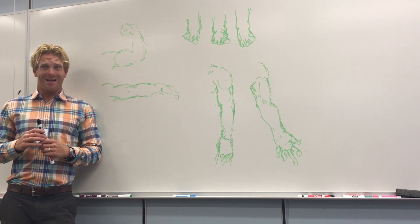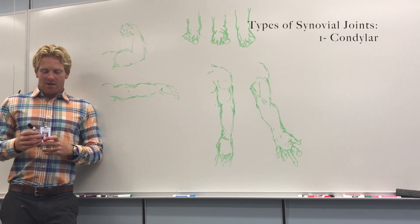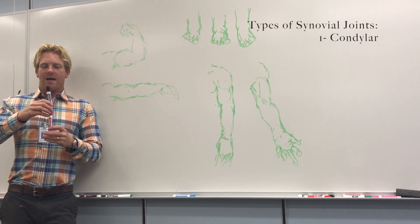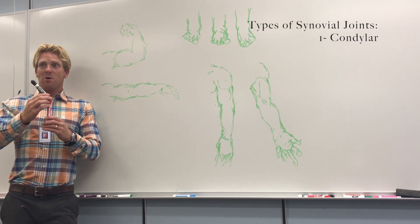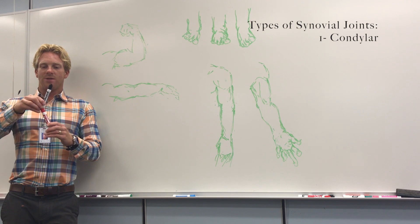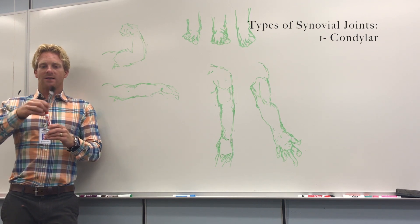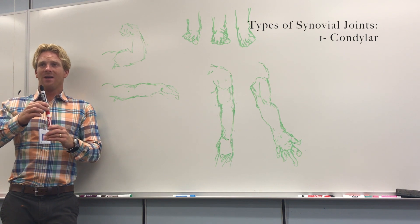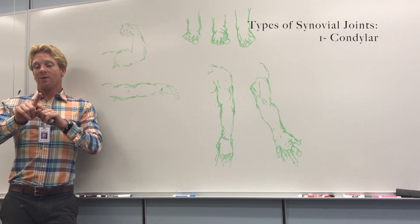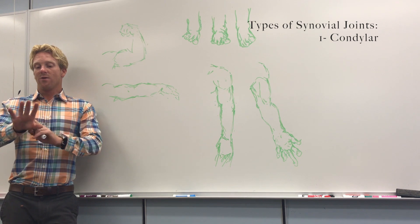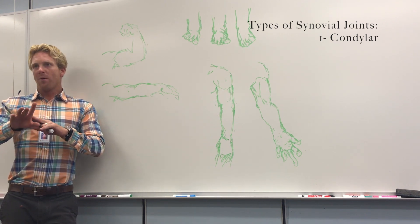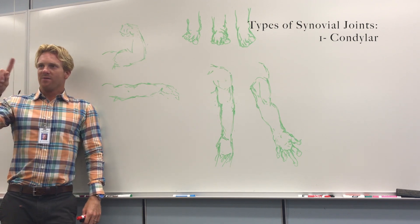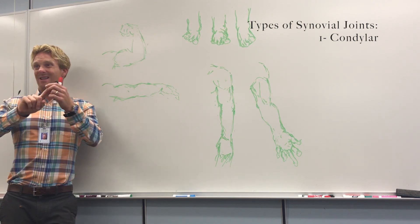One type is called a condylar joint. A condylar joint exists when you have two bones that are attached, and the bones can move in every direction, but they can't spin. So this bone can move like this, like this, like that, like that, but no spinning. An example of this would be the joint that connects your fingers to your hand — the metacarpophalangeal joints, your knuckles — so you can move your finger like this and like this, but you can't spin it.